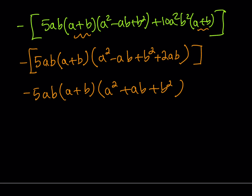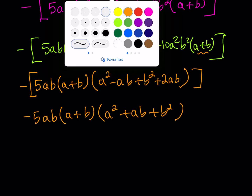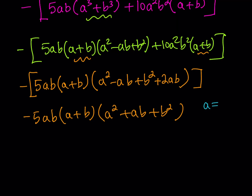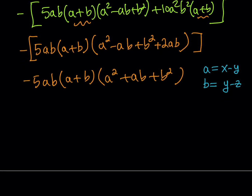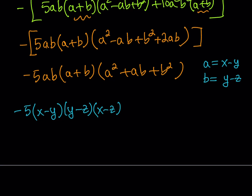So our expression is factored. Now let's back-substitute. We defined a = (x minus y) and b = (y minus z). So negative 5ab becomes negative 5 times (x minus y) times (y minus z). And (a plus b) = (x minus y) + (y minus z) = (x minus z), which with the negative sign becomes (z minus x), matching our original expression.